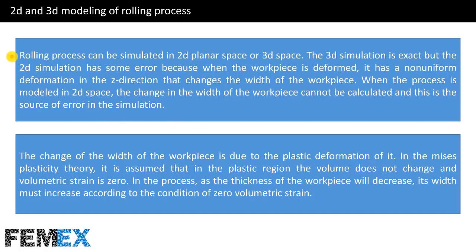Rolling process can be simulated in 2D planar space or 3D space. The 3D simulation is exact, but the 2D simulation has some error because when the workpiece is deformed, it has non-uniform deformation in the z-direction that changes the width of the workpiece. When the process is modeled in 2D space, the change in width cannot be calculated, and this is the source of error. However, comparing 2D and 3D simulation results shows that the 2D results are exact enough and acceptable.